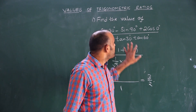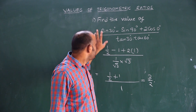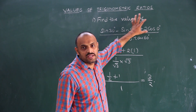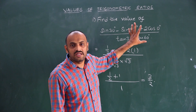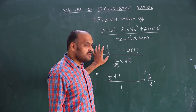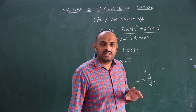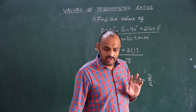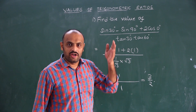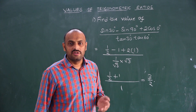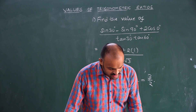So what we have done is simply substitute the values of sin 30 degrees, sin 90 degrees, cos 0 degrees, tan 30 degrees, and tan 60 degrees. For this, we need to recall and remember the trigonometry values table — sin 0 degrees, sin 30 degrees, sin 60 degrees, and all the trigonometric ratios. Let's see one more question.